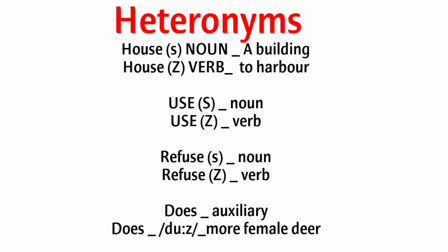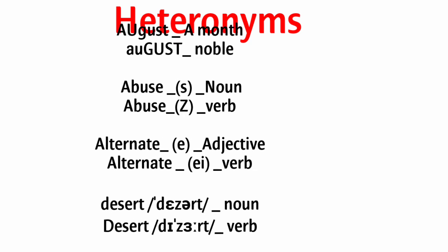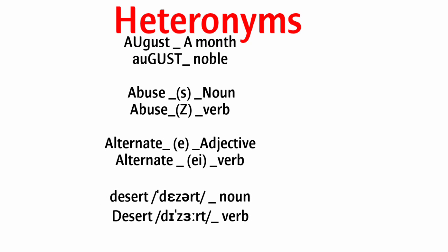More heteronym examples: does — auxiliary verb; does — more than one female deer. August — a month; august — noble. Abuse — a noun; abuse — a verb. Alternate — adjective; alternate — verb. Desert — noun; desert — verb.